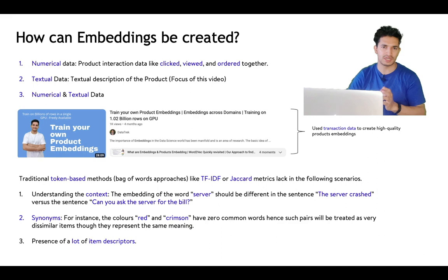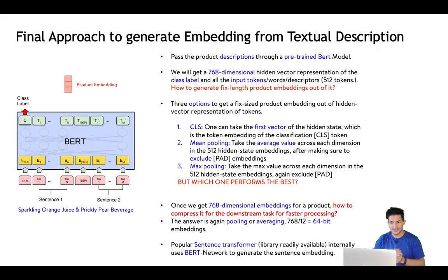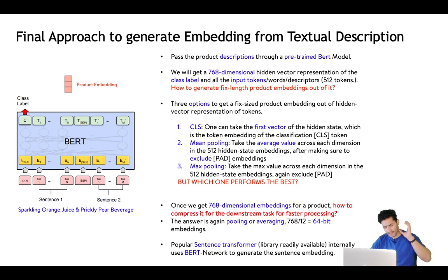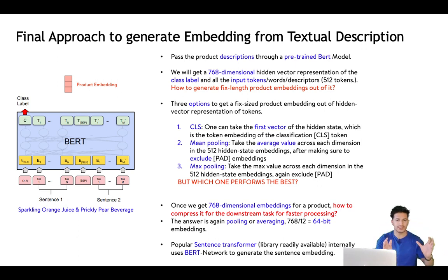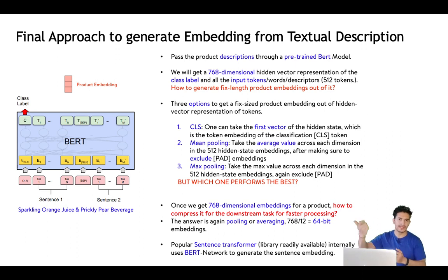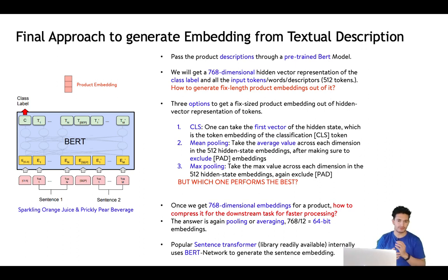Embeddings also perform well even when there are many item descriptors, whereas bag-of-words approaches get worse as the number of words in a description increases. Coming to our final approach before the code: we will generate embeddings from textual representation using a pre-trained BERT model without any fine-tuning. We will pass the textual description to BERT and generate the embeddings.